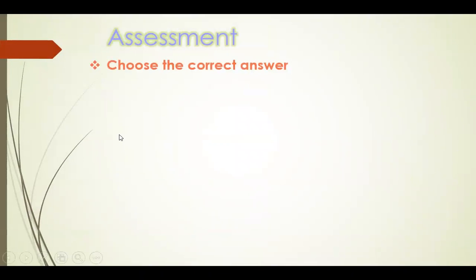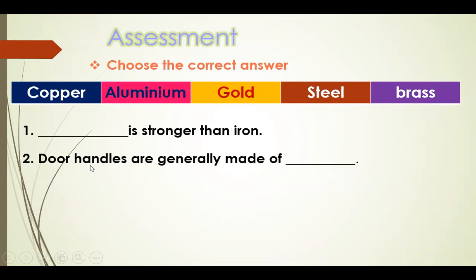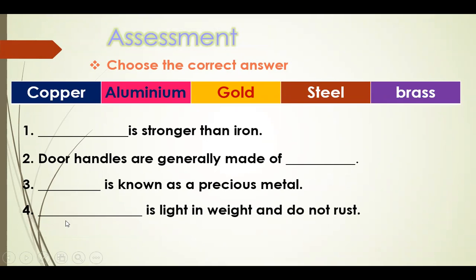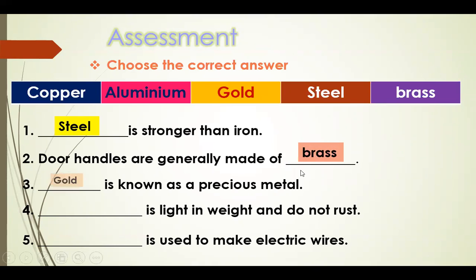Assessment. Choose the correct answer. Dash is stronger than Iron. Door handles are generally made of dash. Dash is known as a precious metal. Dash is light in weight and does not rust. Dash is used to make electric wires. Options: Copper, Aluminium, Gold, Steel, Brass. Check your answers: Steel is stronger than Iron. Door handles are made of Brass. Gold is known as a precious metal. Aluminium is light in weight and does not rust. Copper is used to make electric wires.